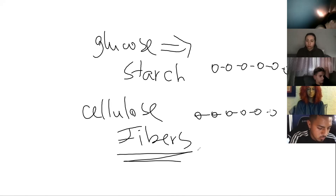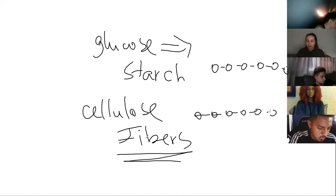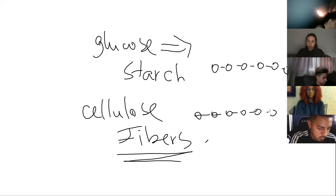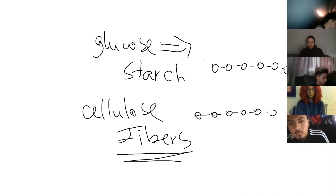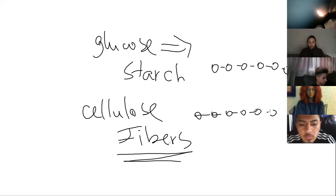It's good to eat food rich in fiber for two reasons: first, dietary fibers stimulate the digestive tract, keeping it healthy. Second, since you can't digest them, you consume fewer calories. For example, eating celery gives you fewer calories than eating a cookie, because the cookie is all starch — fully digested — while celery has fibers that pass through undigested.